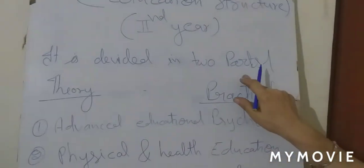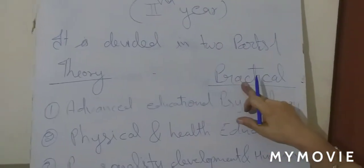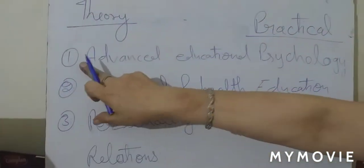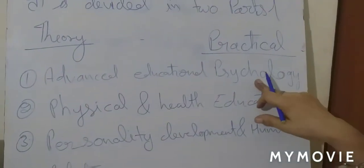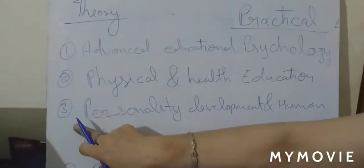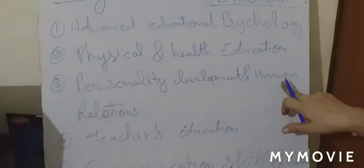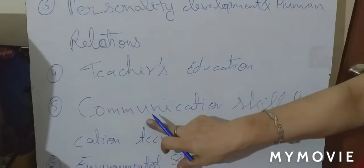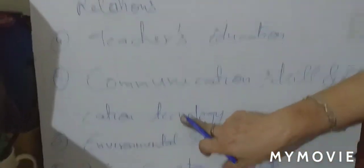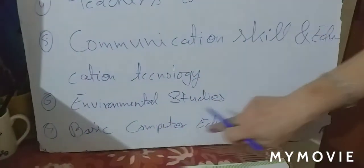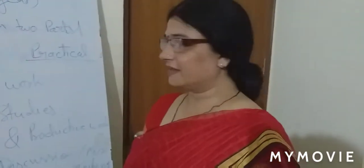Now I will tell you the education structure of second year. It is also divided into two parts: theory and practical. There are seven theory papers. First paper is advanced educational psychology, second is physical and health education, third is personality development and human relations, fourth is teacher's education, fifth is communication skills and education technology, sixth is environmental studies, seventh is basic computer education. Har paper 100 marks ka hai.